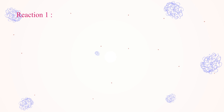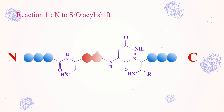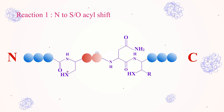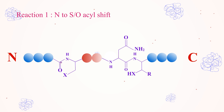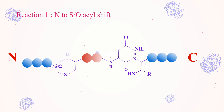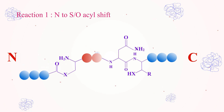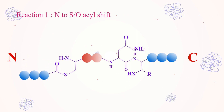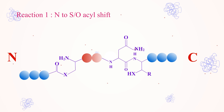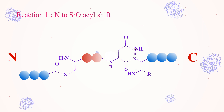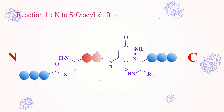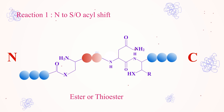Reaction 1: N-to-S or O-acyl shift. In the first step of the protein splicing reaction, the conserved cysteine or serine residue seen in the first intein residue will nucleophilically attack the adjacent carbonyl carbon of the extein, to form the intermediate oxyoxazolidine or oxythiazolidine, and finally an ester or thioester.